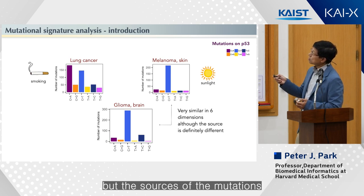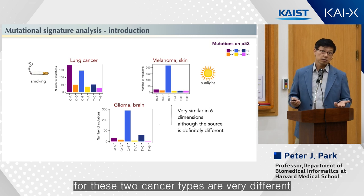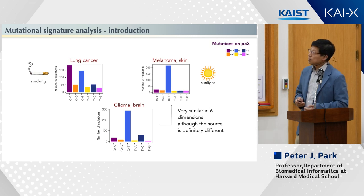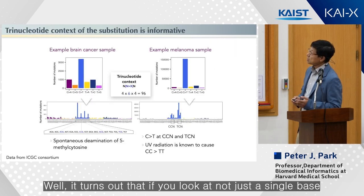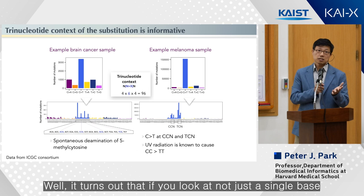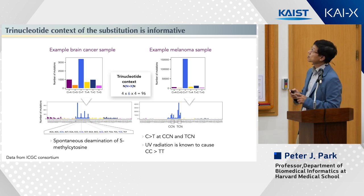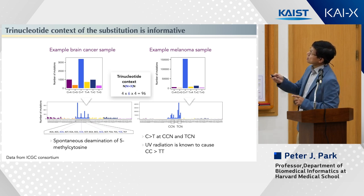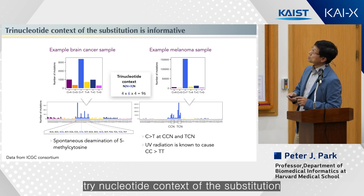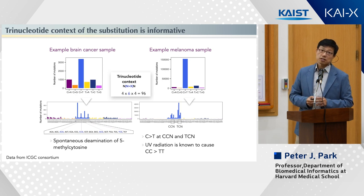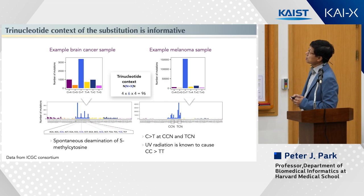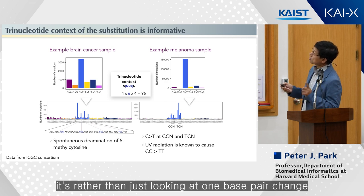But the sources of the mutations for these two cancer types are very different. It turns out that if you look at not just a single base but its neighboring bases — the trinucleotide context of the substitution — then you can actually tell them apart. So rather than just looking at one base pair change in isolation, we're going to look at its context.